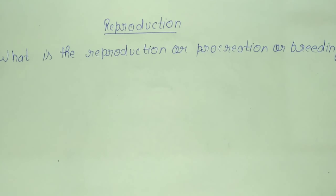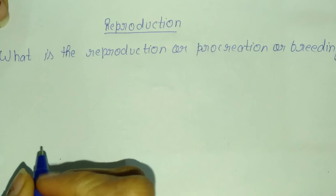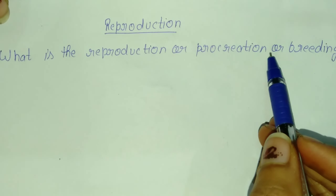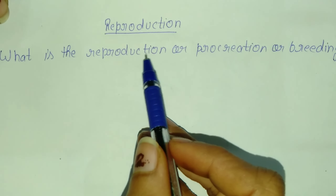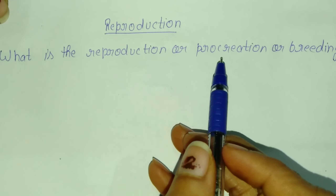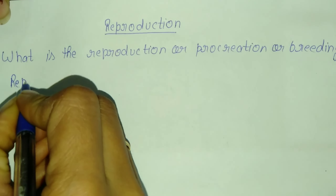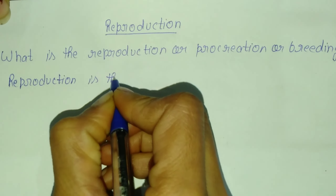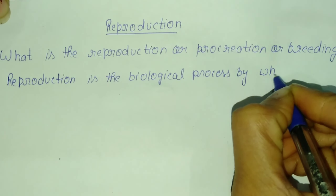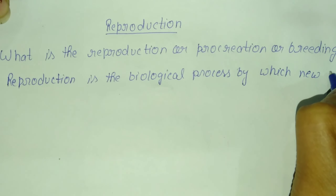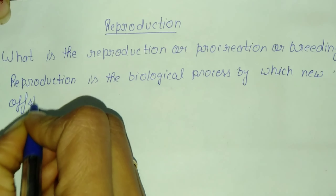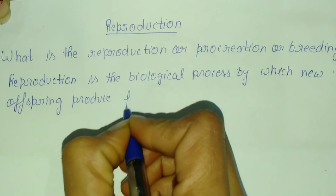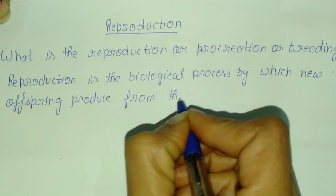Hello friends, you are welcome in my channel Preparation for Future. Today's topic is reproduction. What is reproduction, or procreation, or breeding? Reproduction means new offspring produced from their parents. Reproduction is the biological process by which new offspring are produced from their parents.